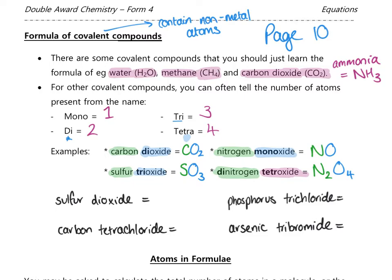I've written a few more examples on screen. Pause the video and try to write the formula for: sulfur dioxide, carbon tetrachloride, phosphorus trichloride, and arsenic tribromide. Give those a go and then play the video again to check your answers.